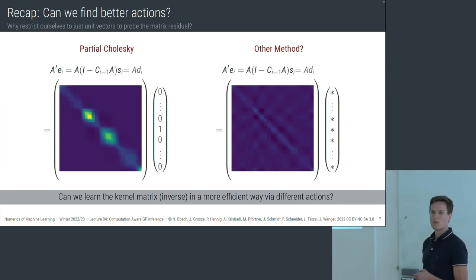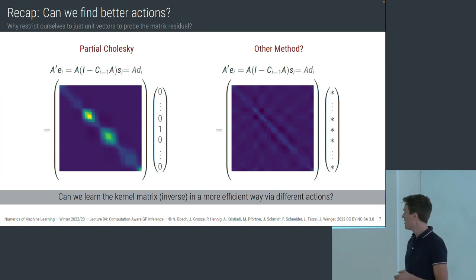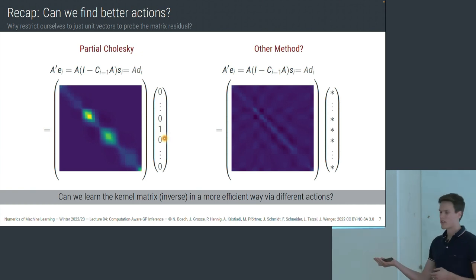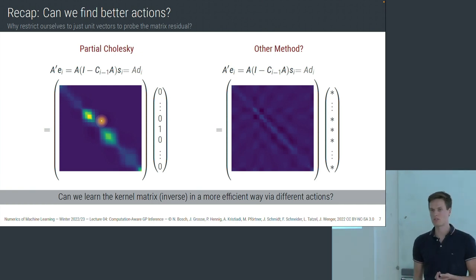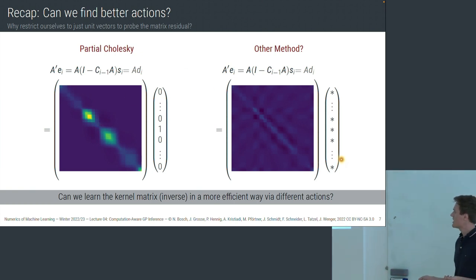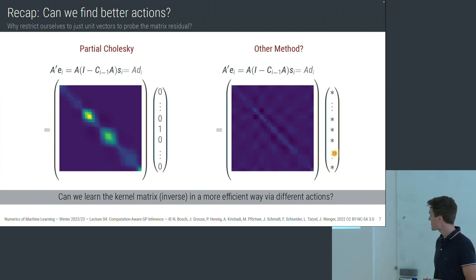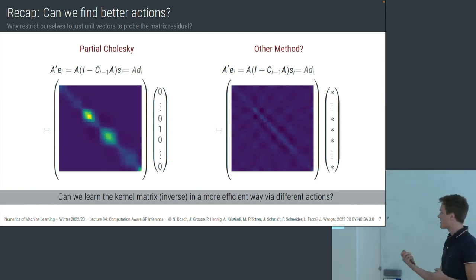The natural follow-up question: can we find better actions? On the left for partial Cholesky, this is the residual matrix — the part of the kernel matrix we haven't learned yet. When we choose unit actions, we've observed only the middle portion of the matrix, and there are still large values in the residual elsewhere. With dense actions — vectors with some entry in every component — we can more quickly learn the kernel matrix. The residual becomes much smaller.